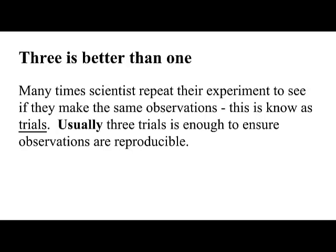It is very common that scientists repeat their experiments to see if they make the same observations over and over again. The repetition of the experiment is known as a trial. Usually, three trials is enough to ensure you can see the same thing over and over, or your observation is reproducible.